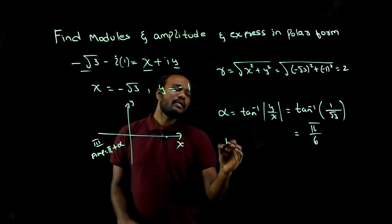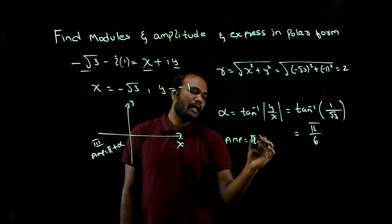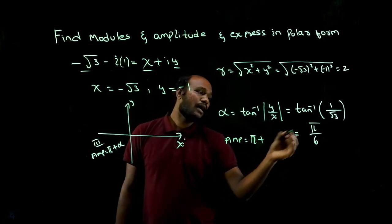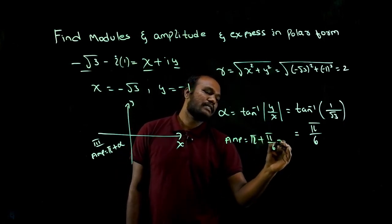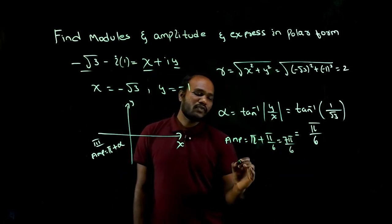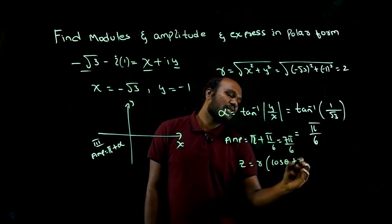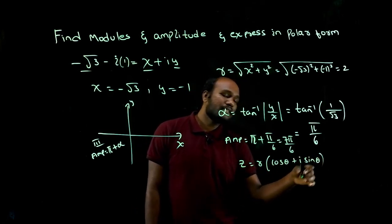So what is the amplitude? Amplitude is pi plus alpha, that is pi plus pi over 6. This will become 7 pi over 6. To find z, the formula is r into cos theta plus i sine theta.